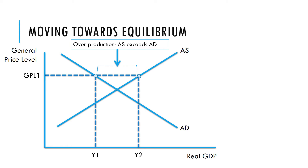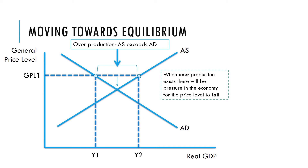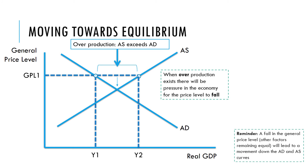In this situation of overproduction, we would predict that there would be pressure for the price level to fall. When there is excess supply, that tends to bid down the prices of goods and services. A reminder that a fall or change in price level would lead to a movement along the aggregate demand and aggregate supply curves.